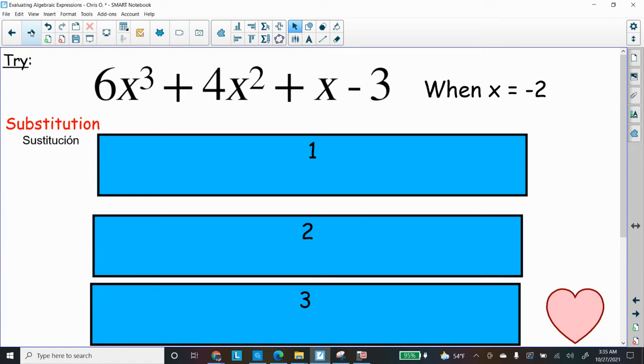So let's try it again. This time we have 6x³ + 4x² + x - 3 when x = -2. So we have a negative integer this time. We're going to substitute.